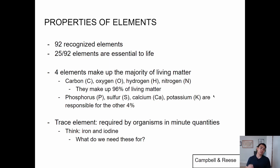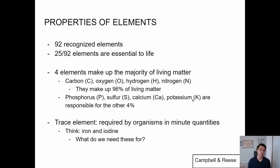There are 92 elements, but of those 92, 25 are essential to life, and there are really four that are pretty critical: carbon, oxygen, hydrogen, and nitrogen. Those four make up 96% of living matter. Some that are important too are phosphorus, sulfur, calcium, and potassium — they make up the other 4%, so together that's 100% of living matter.